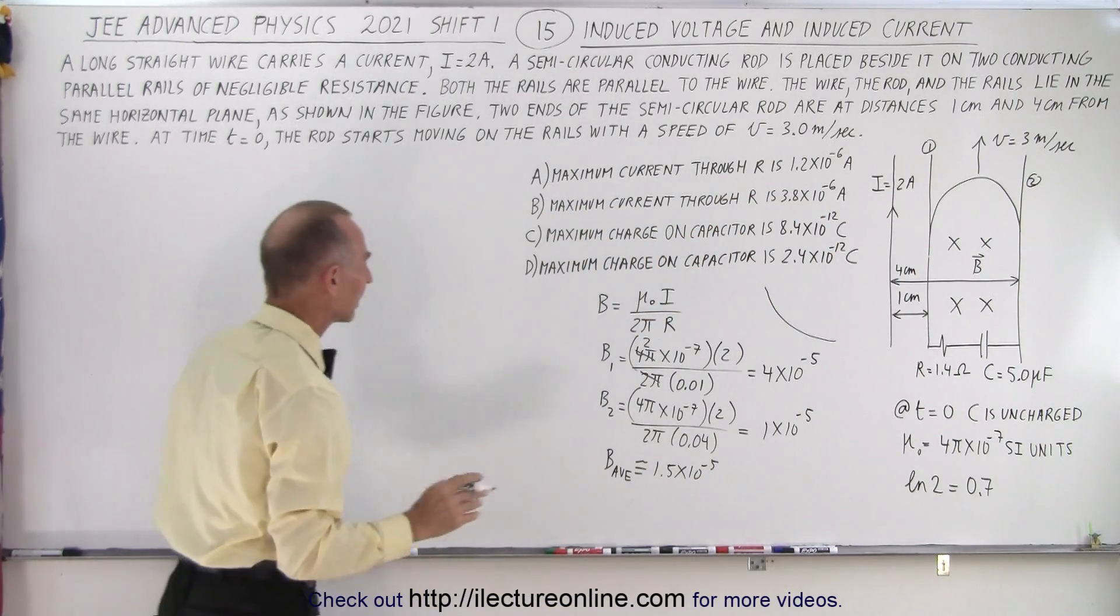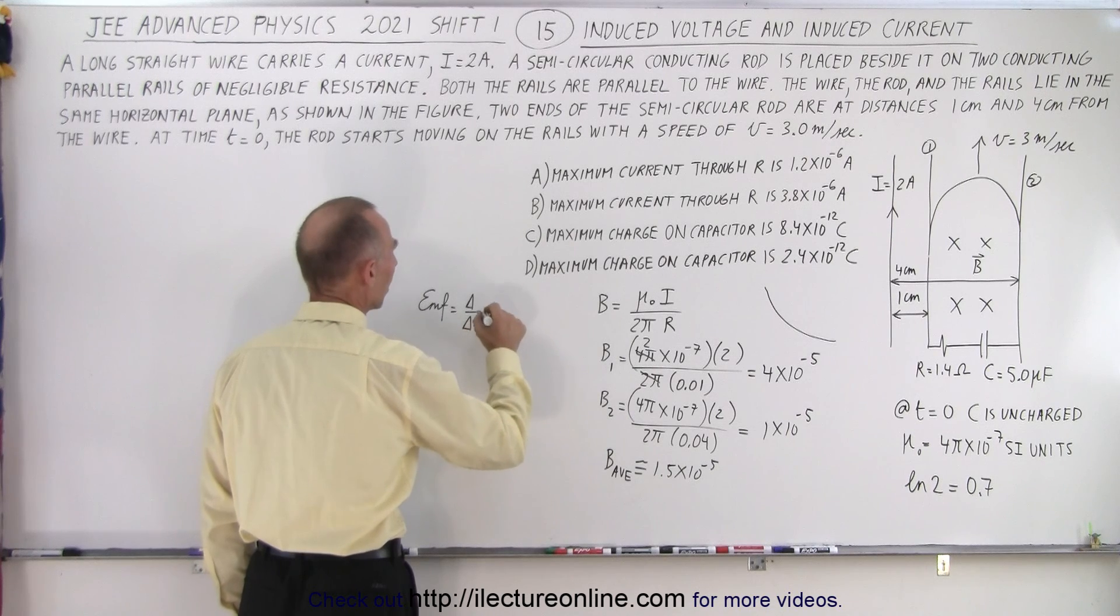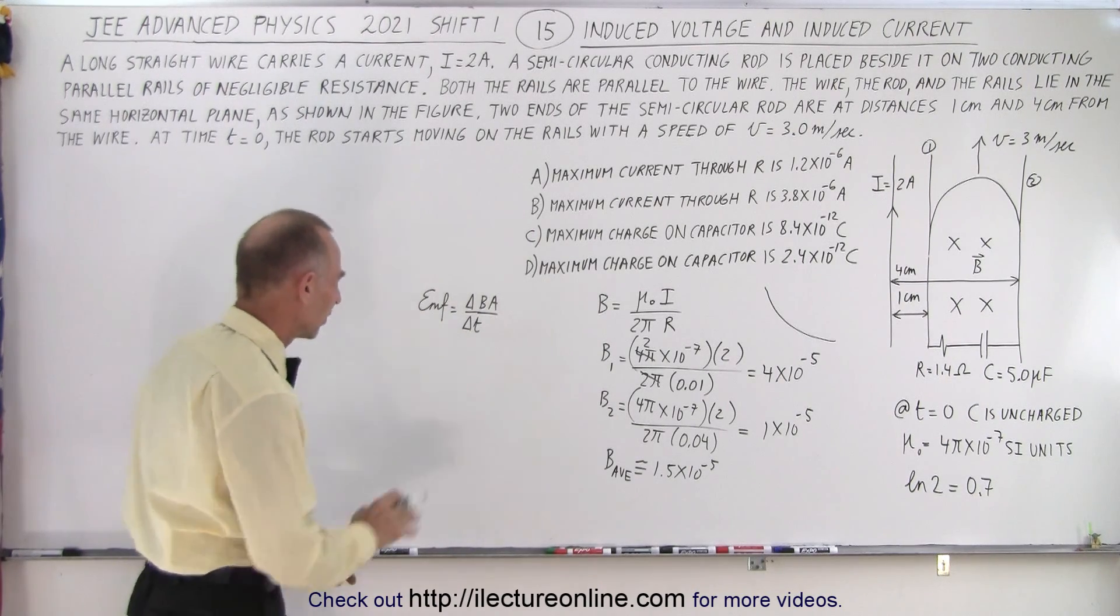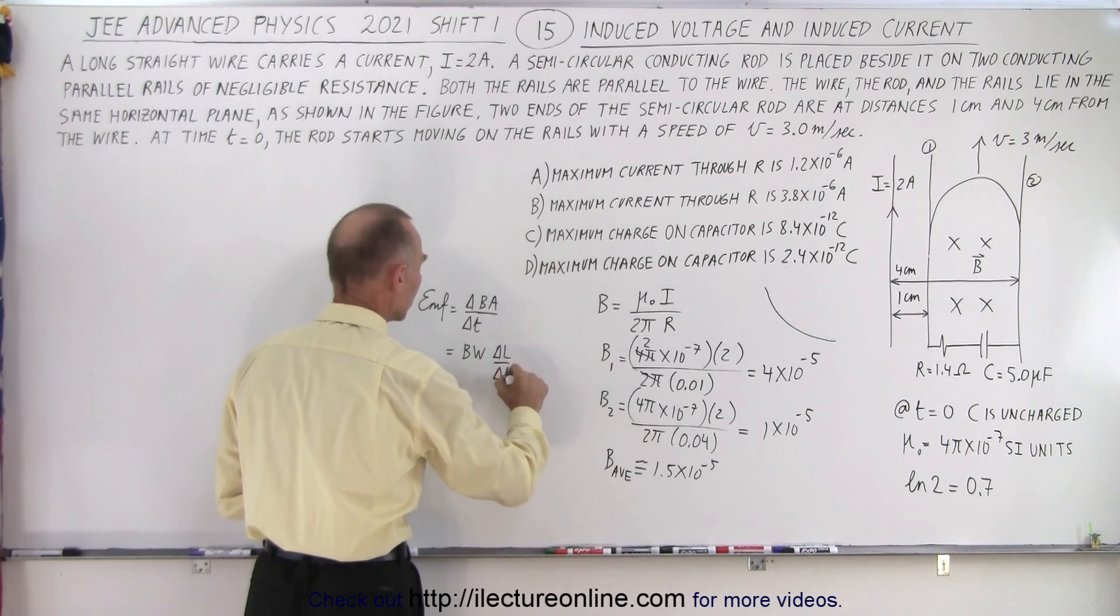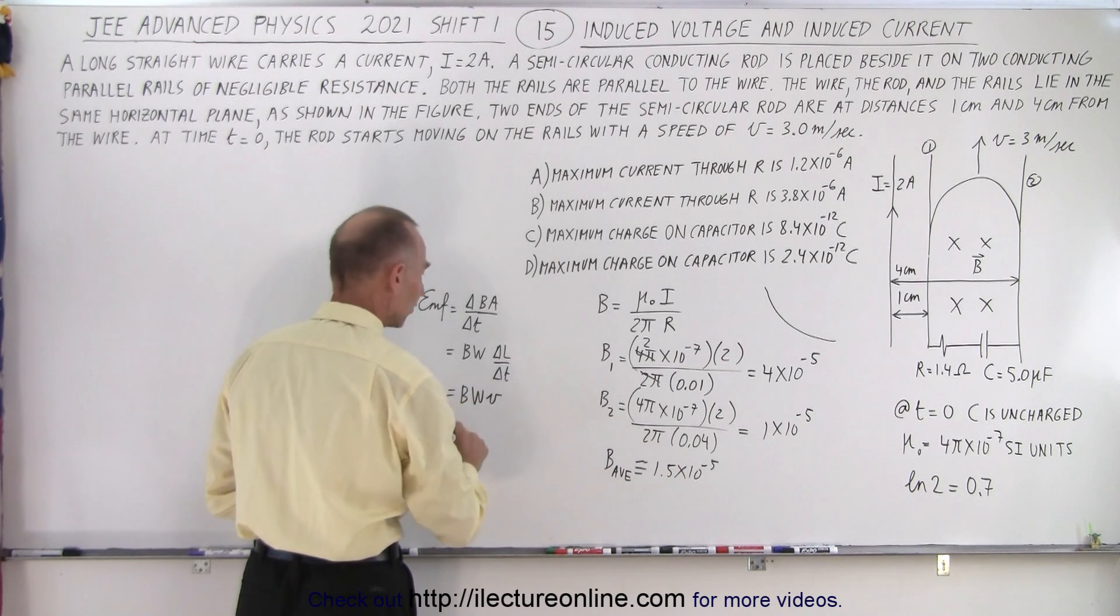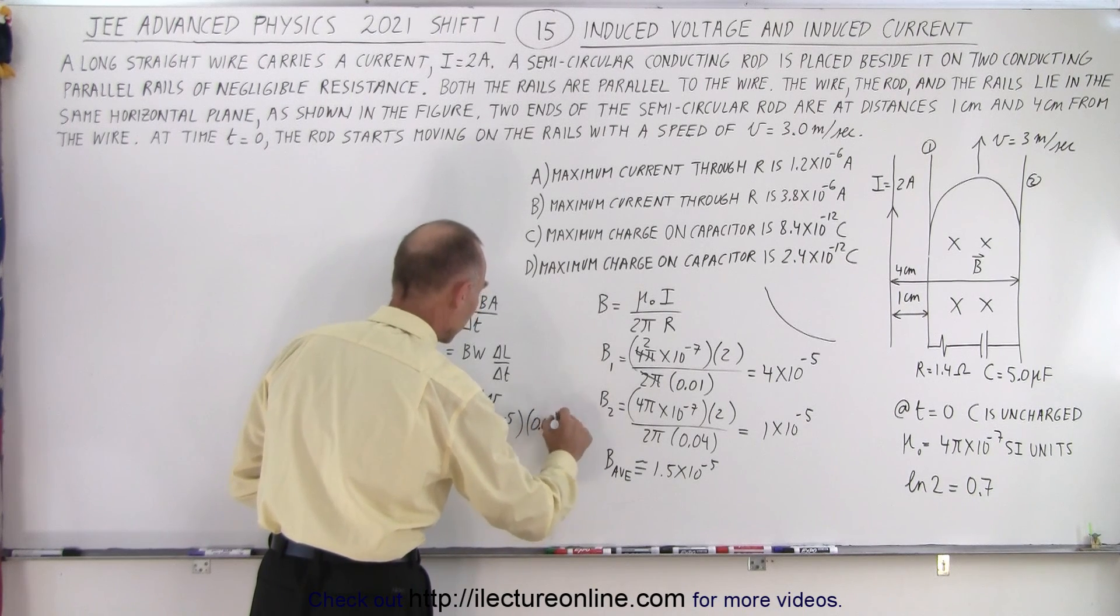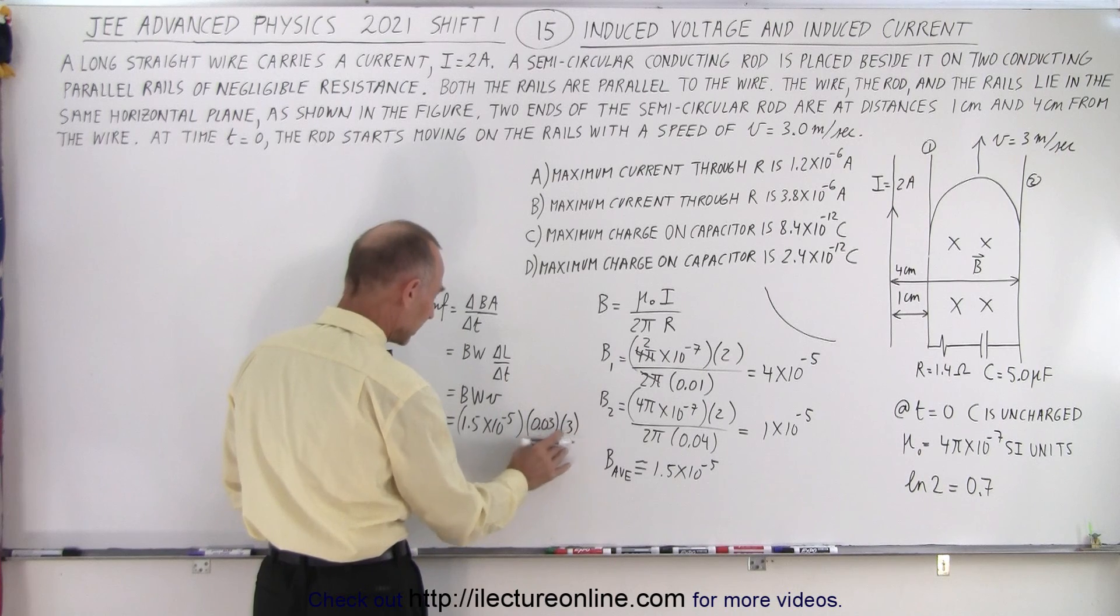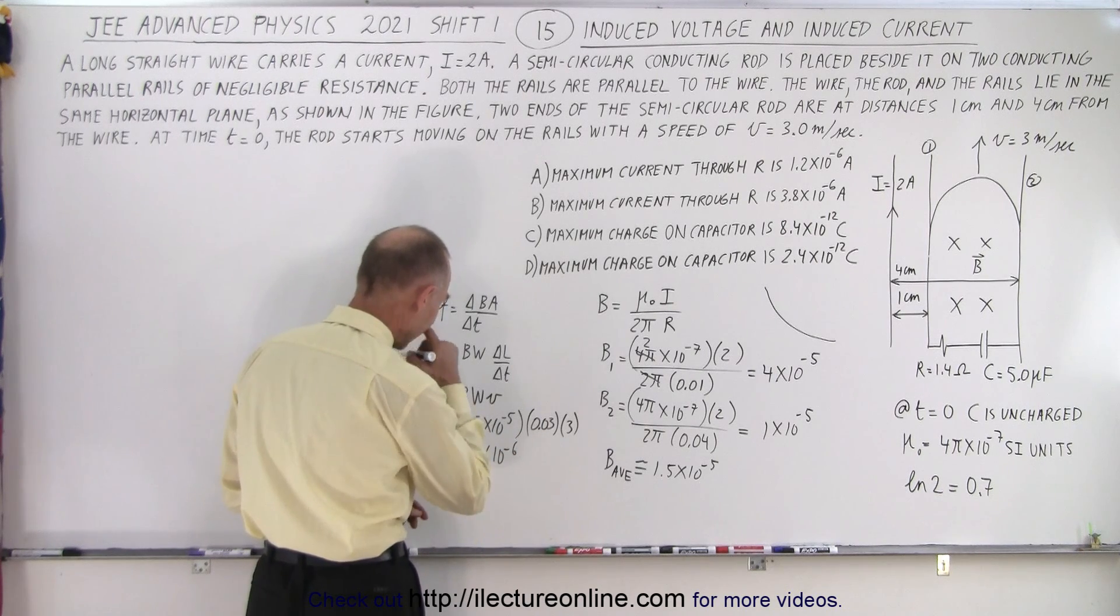So now we can go ahead and calculate the EMF induced. The EMF induced is equal to the rate of change with respect to time of the B field times the area. Essentially the magnetic flux per unit time change. We forget about the negative sign. The magnetic field doesn't change. The width doesn't change but the length changes. So it would be the delta length over delta T which essentially is the velocity by which the rod moves. That's equal to B the width times the velocity. So in this case we had 1.5 times 10 to the minus 5. The width is 3 centimeters, 0.03, and the velocity is equal to 3. That would be 0.09. So that would be about 0.9 times this. That would be about 1.4 times 10 to the minus 6 volts.